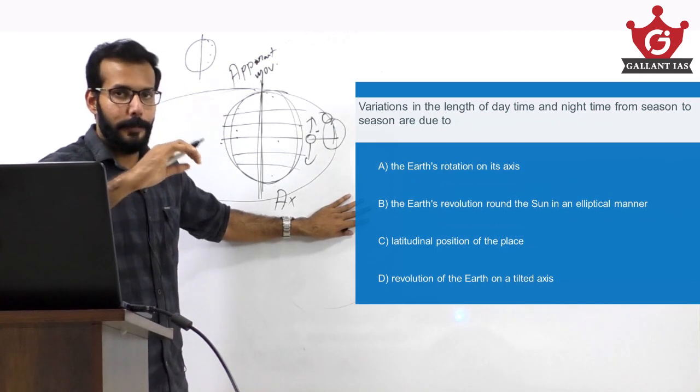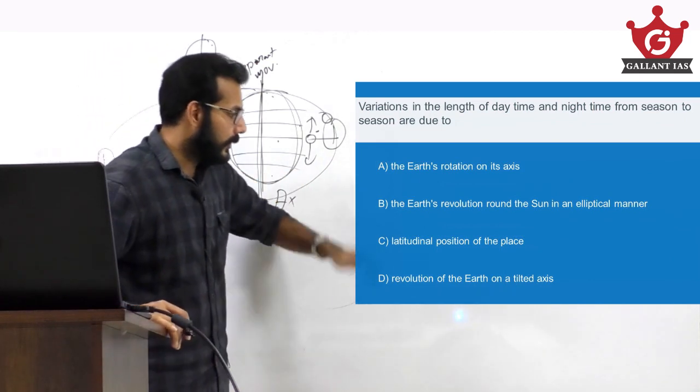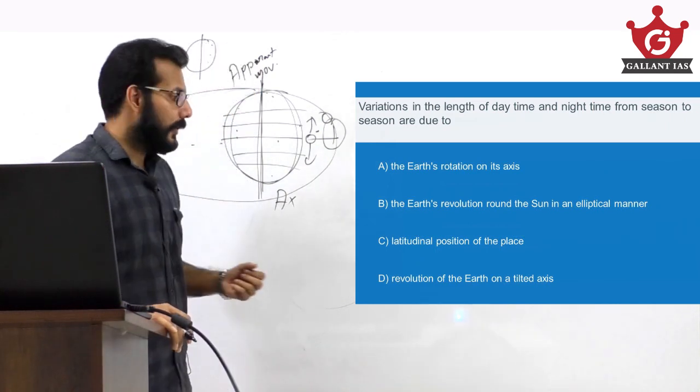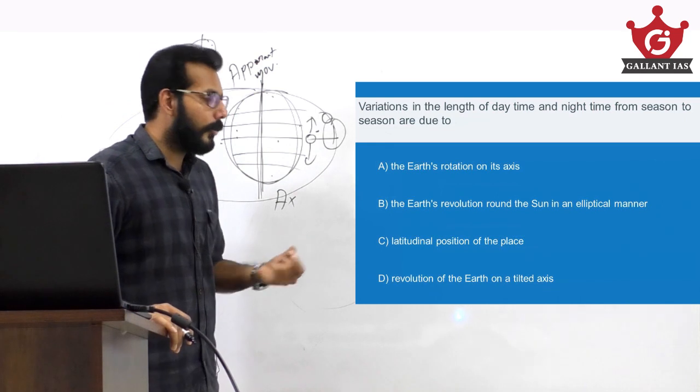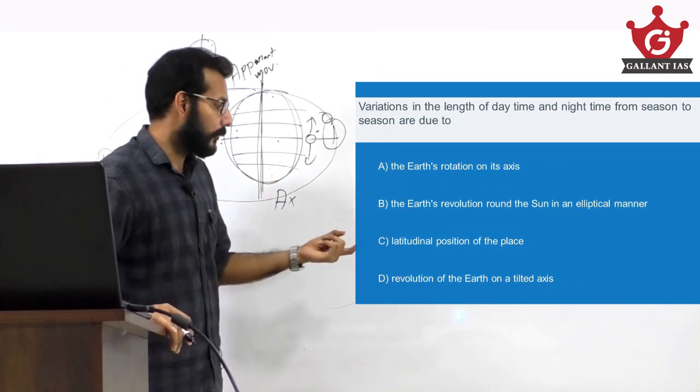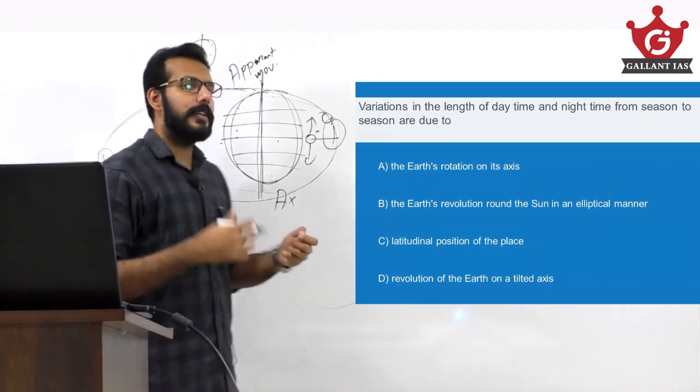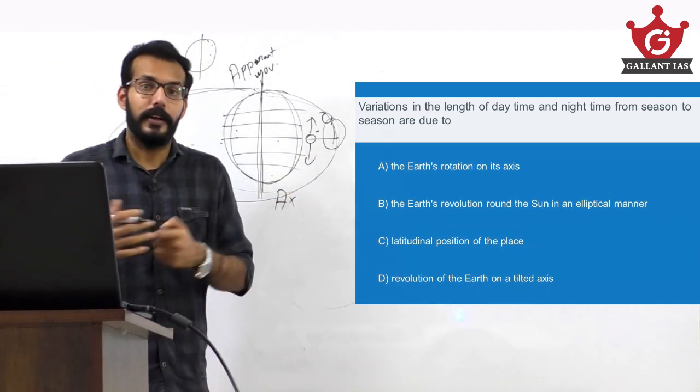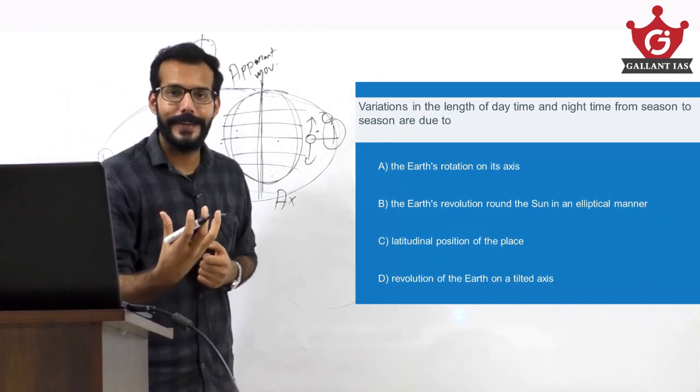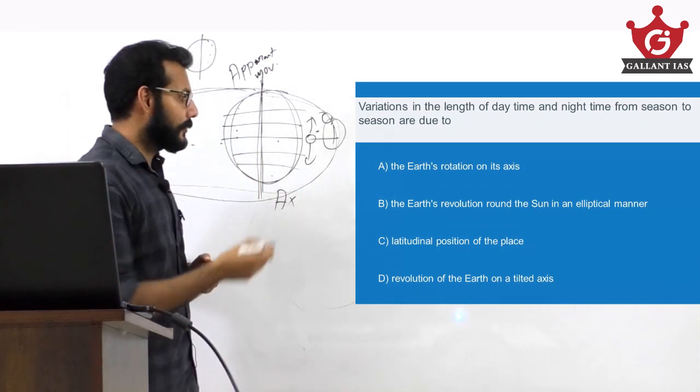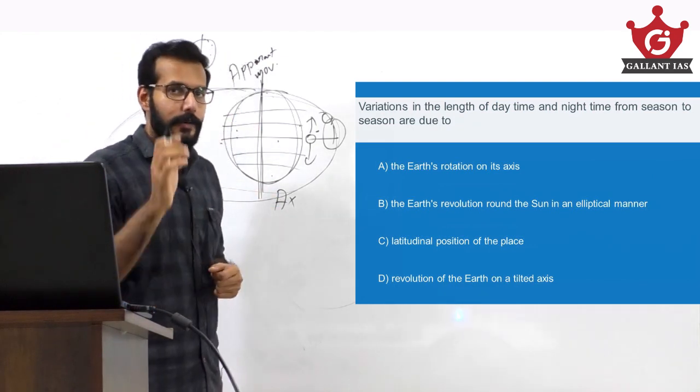Even if you're not clear with B, read the last option: revolution of the Earth on a tilted axis. Now it is more specific and clear, more possible and plausible. Revolution is true - it is revolving around the Sun, and we know that revolution and the movement of Earth through space creates this variation in seasons.